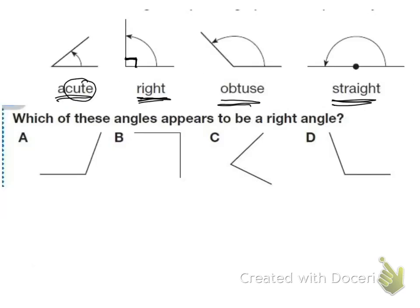Which of these angles appears to be a right angle? We don't have the little square this time to show us, but we can see what it is. This angle seems to be bigger than a square angle so it's not that one. This one looks like it has a square, so B is probably the right answer, but let's look at the others. C has a smaller angle and D looks like it has just a little bit of a bigger angle — it doesn't form a square. So B is the angle that is a right angle.